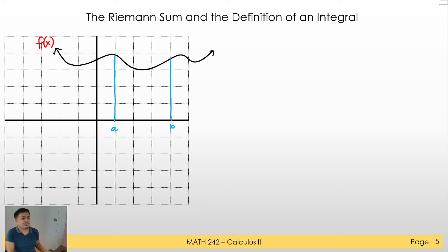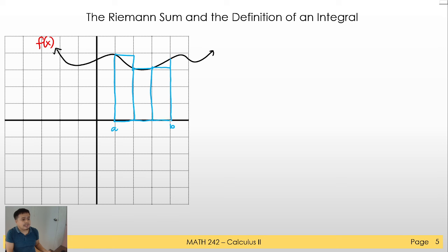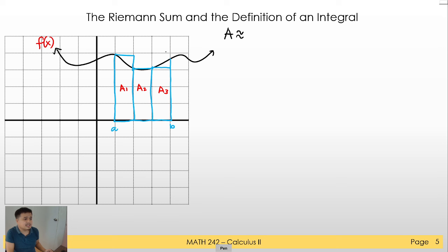Let's say we divide this region into three, so we can create rectangles here. This is the approximation of the area under this curve, and this would be a sum of three rectangles — area one, area two, and area three. The total area will be approximately equal to this; we are just estimating and will not get it exactly. As you can see, we have overlap and underlap here.